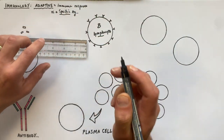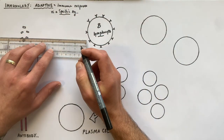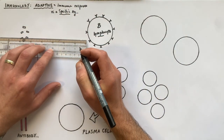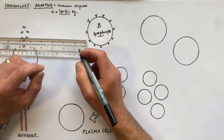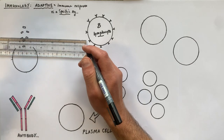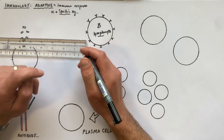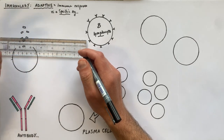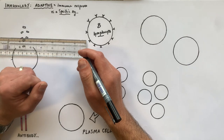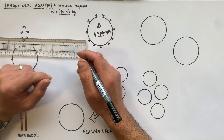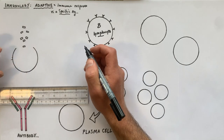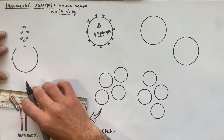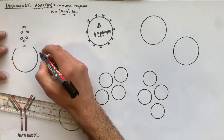The antigen is any molecule on the surface of the pathogen. It could be part of the peptidoglycan cell wall of a gram-positive bacterium, or it could be part of the capsid protein envelope of a virus, for example.